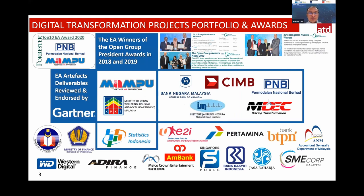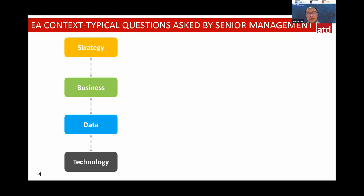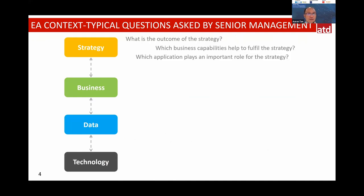The rest of our clients are across Singapore, Malaysia, Indonesia, and Hong Kong. Now let me go straight into context. These are the typical challenges if you are working as an enterprise architect in financial services or a bank — you need to be aligned with strategy, business, data, and technology. Architects are expected to answer questions like: what is the outcome of the strategy, and which business capability fulfills it?